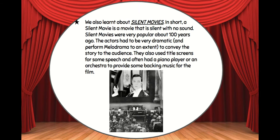We also learnt about silent movies, and we learnt that a silent movie is a movie with no sound. They were very popular about 100 years ago. The actors had to be very dramatic, and they would often use melodrama to help enhance their performance in order to convey the story to the audience. They also used title screens for some speech, and often had a piano player or an orchestra to provide backing music, which was often played live while the movie was playing.